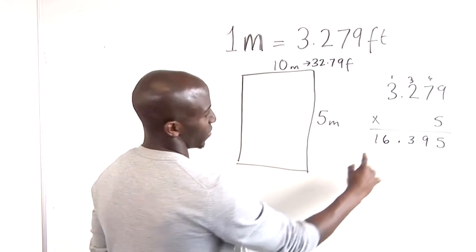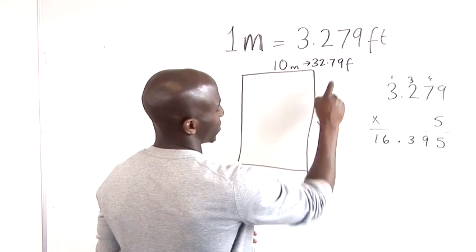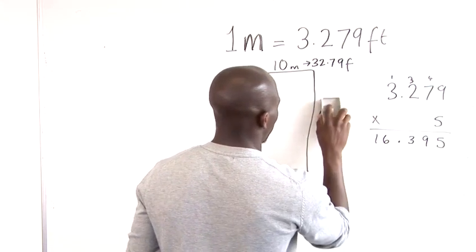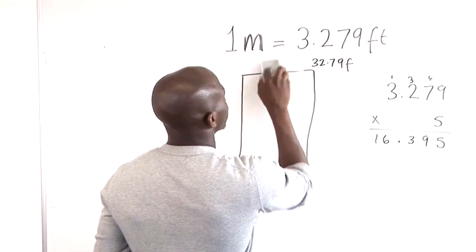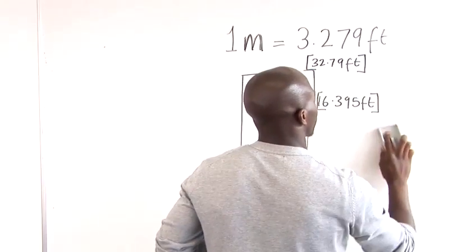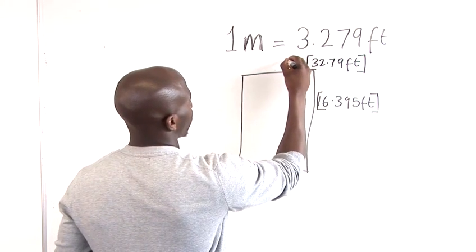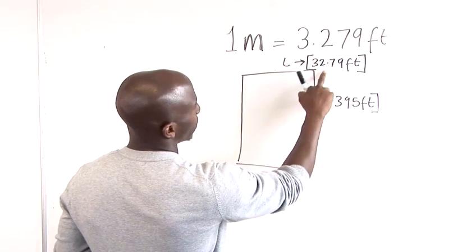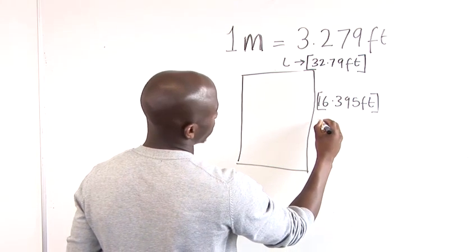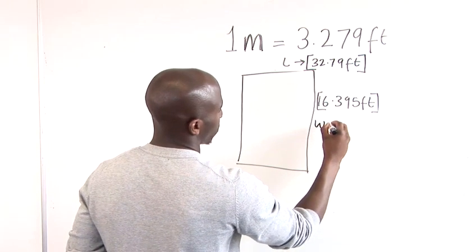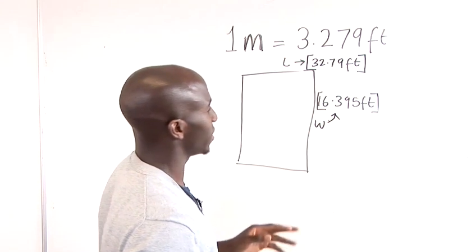So as you can see we've got a measurement of 16.395 and that is pretty much half of this. So we can rub this out. Now we have for the length 32.79 feet and for the width we have 16.395 feet.